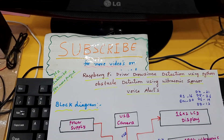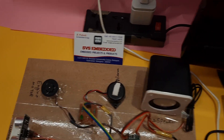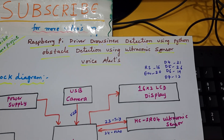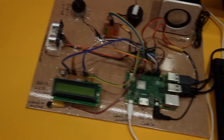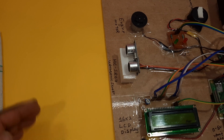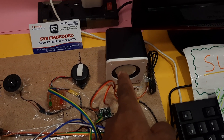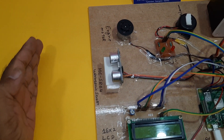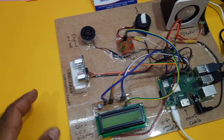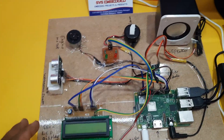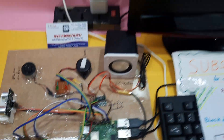Hi, we are from SPS Embedded. The project title is Raspberry Pi driver drowsiness detection using Python. Obstacle detection using ultrasonic sensor with voice alerts: if distance is below 30 centimeters, it will say 'obstacle detected.' If 30 centimeters and above, there is no obstacle detection. That is how we programmed it.